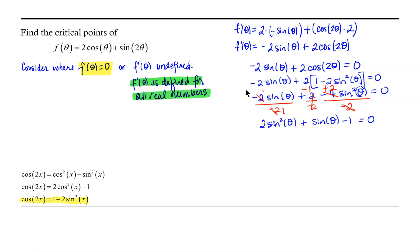At this point we could use the quadratic formula, since this is a quadratic equation, or we could simply factor. This is a quadratic equation in terms of sine of theta, so I'm going to factor it as 2 sine of theta times sine of theta, with the goal of having the outside and inside terms add to positive sine theta.